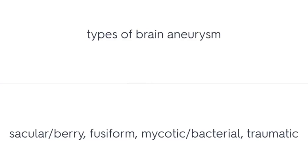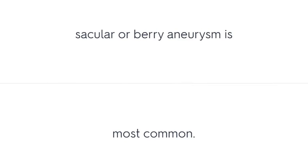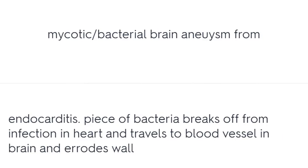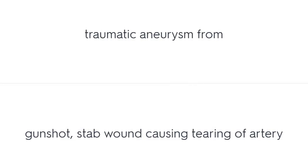Types of brain aneurysm: Saccular or berry aneurysm is the most common. Fusiform aneurysm is when the entire artery segment is dilated — treatment is more difficult. Mycotic bacterial aneurysm results from endocarditis, where a piece of bacteria breaks off from an infection in the heart, travels to a blood vessel in the brain, and erodes the wall. Traumatic aneurysm results from a gunshot or stab wound causing tearing of the artery.